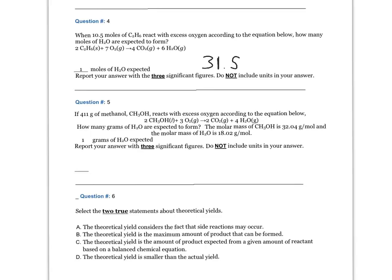Question five. If 411 grams of methanol CH3OH reacts with excess oxygen, how many grams of H2O are expected to form? The molar mass of CH3OH is 32.04 grams per mole and the molar mass of H2O is 18.02 grams per mole. Report your answer with three significant figures. Do not include units. The answer is 462 grams of H2O expected.